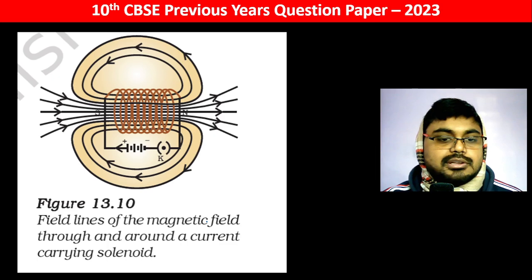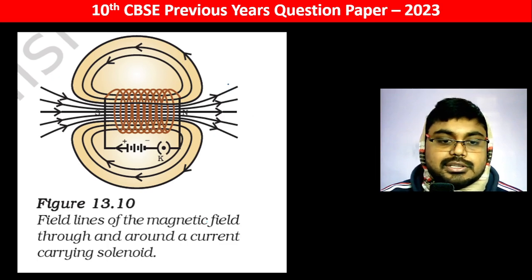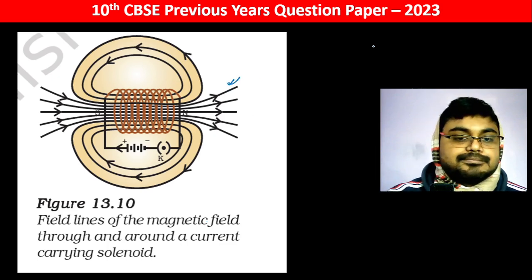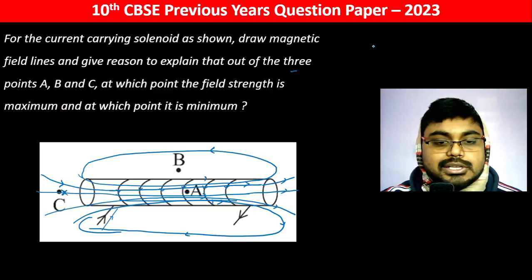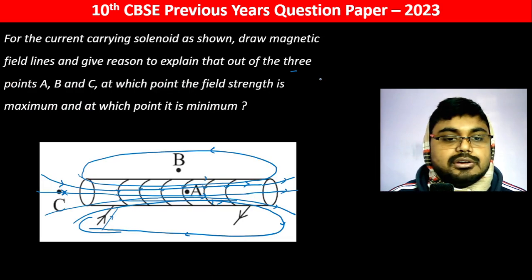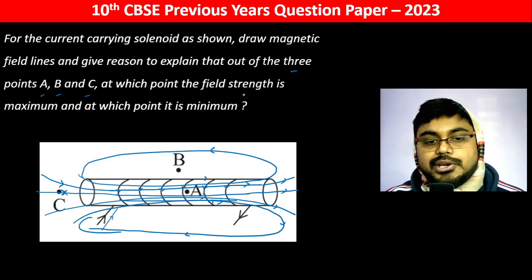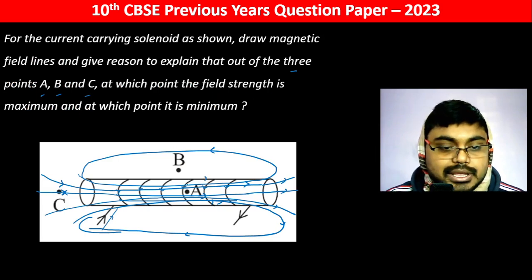This is the diagram which is given in NCERT — this is the diagram about the magnetic field lines. Now, at points A, B, and C, at which point is the field strength maximum?